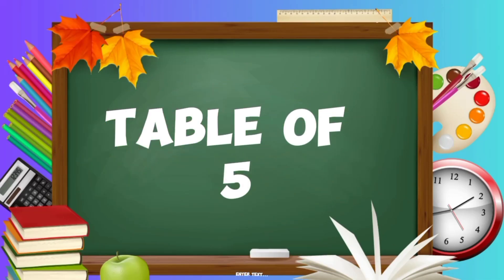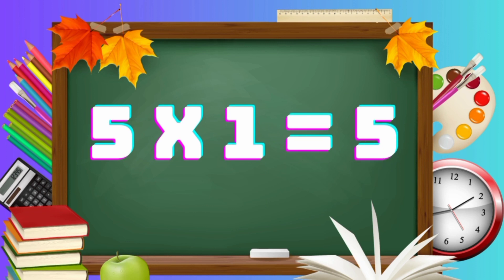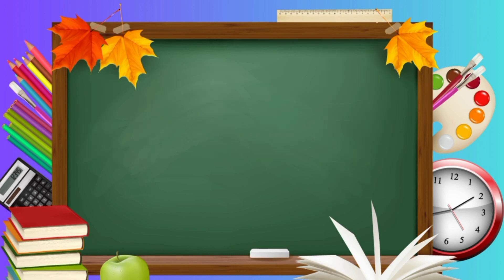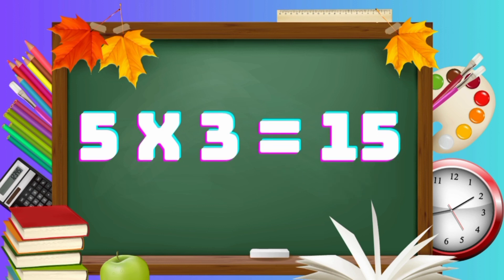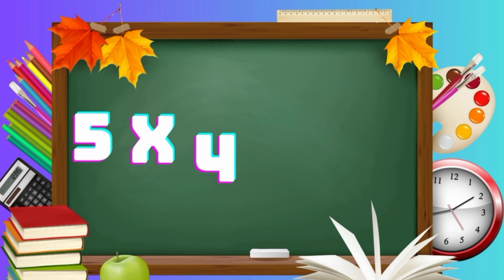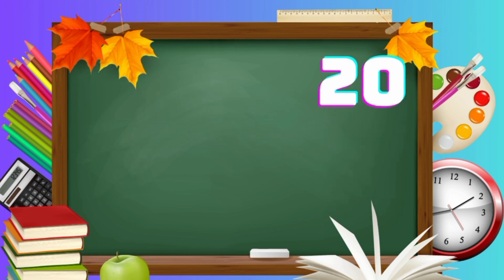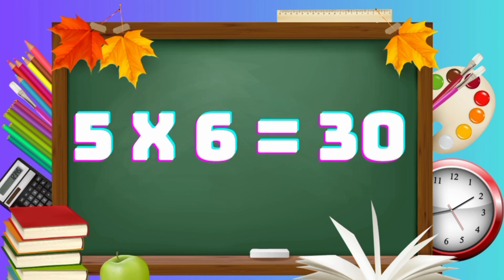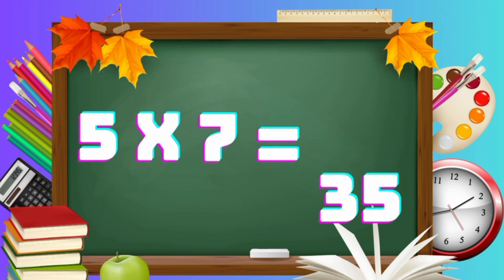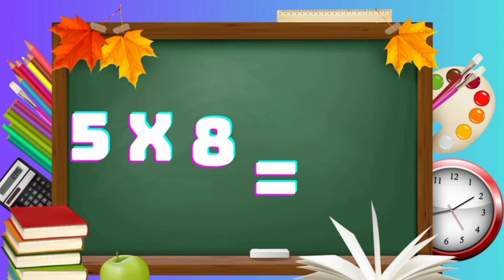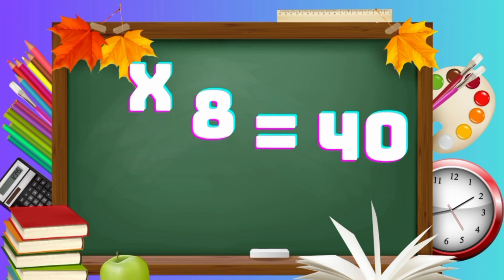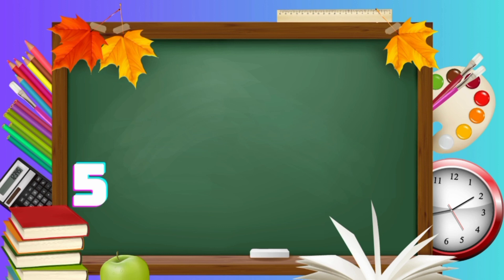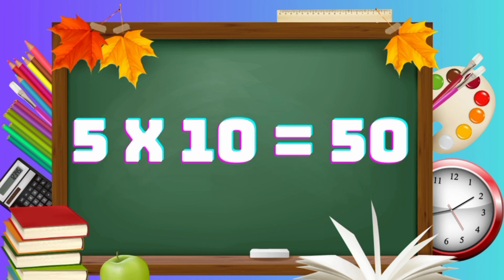Learn table of five. 5 ones are 5. 5 twos are 10. 5 threes are 15. 5 fours are 20. 5 fives are 25. 5 sixes are 30. 5 sevens are 35. 5 eights are 40. 5 nines are 45. 5 tens are 50.